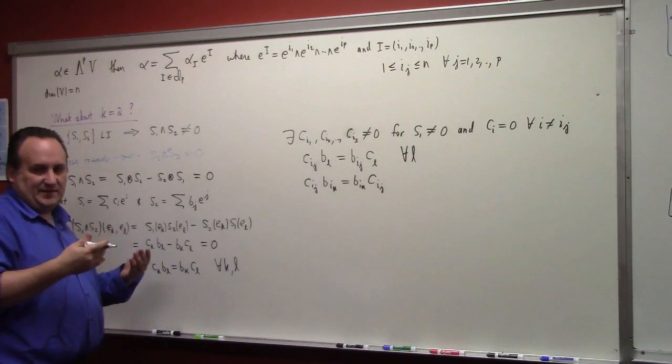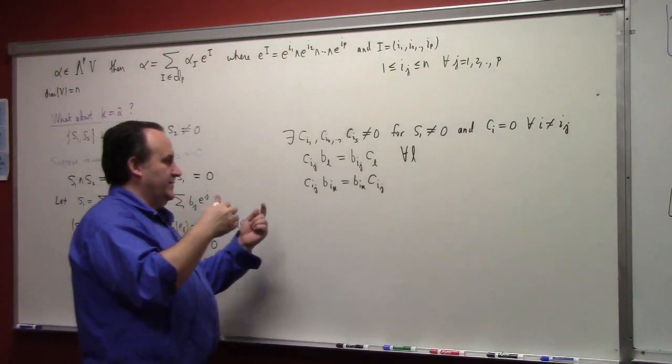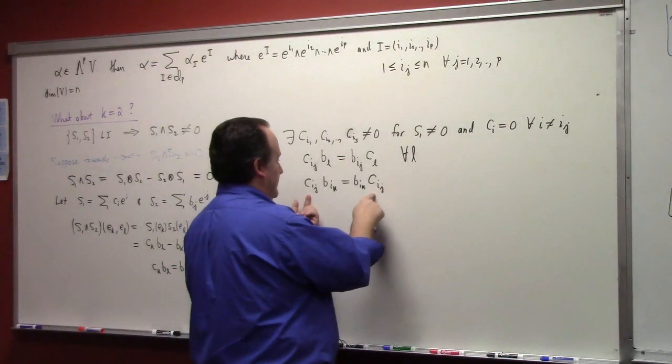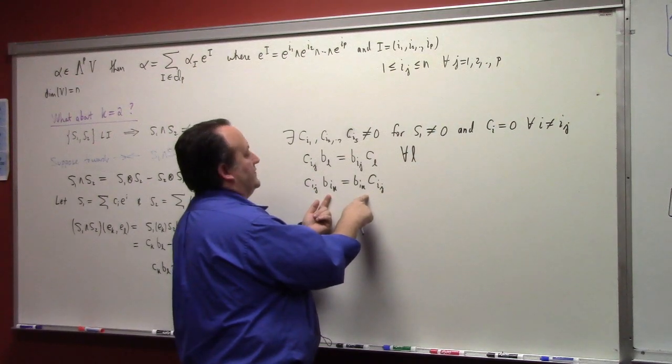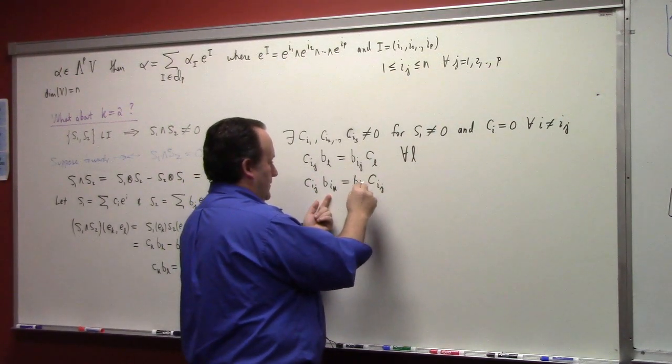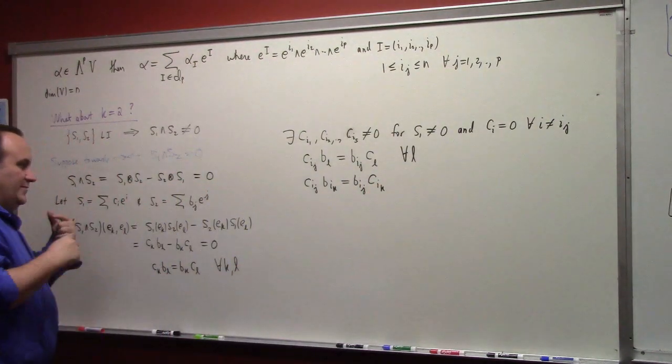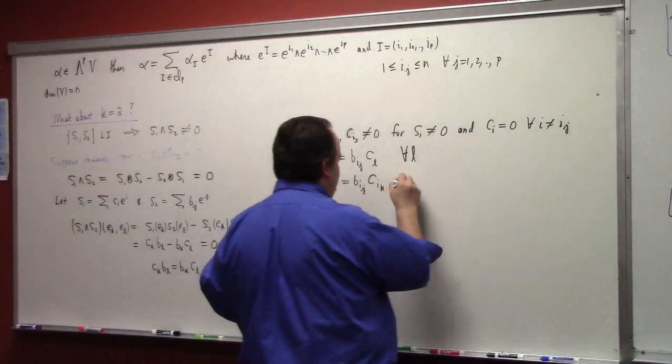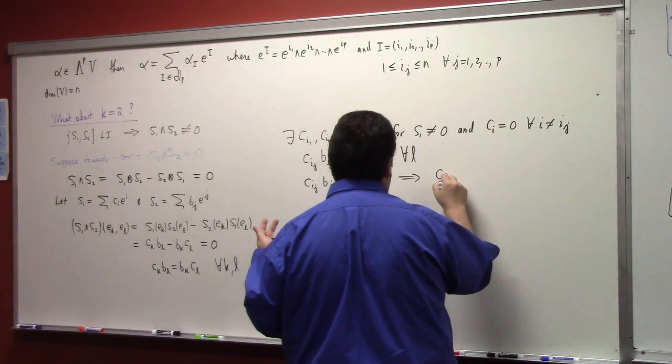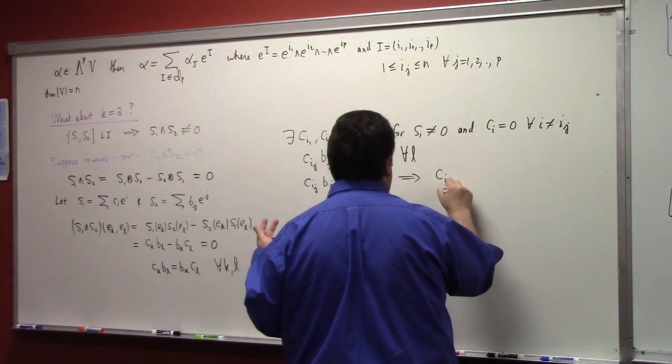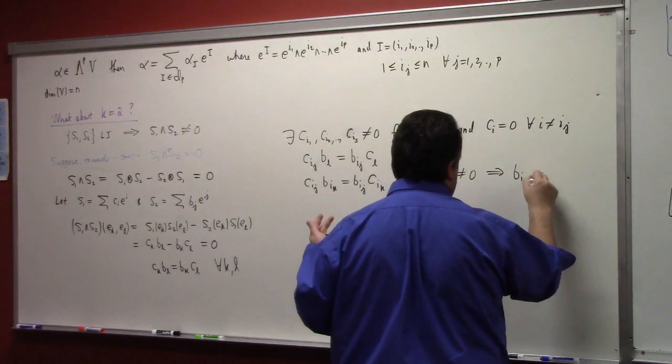Well, they have to be nonzero because this is nonzero, that's nonzero. These are supposed to be different letters. I believe if I can suspend my doubt for a second here, that that implies that Cij not equal to zero implies that Bij is not equal to zero.